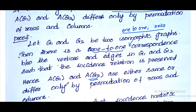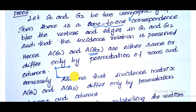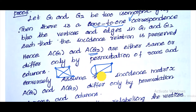The condition of isomorphism is satisfied. The two graphs are isomorphic when the incidence relation is the same — because the number of vertices is the same, the degree of each vertex is the same, and the number of edges is the same, so isomorphism is preserved. This condition is satisfied.